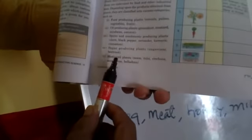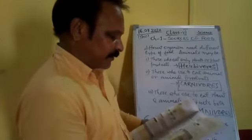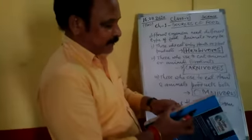And lastly, medicinal plants — for example, Tulsi, coriander, neem, eucalyptus, and belladonna. All these are medicinal plants. So, many food items come from various different types of plants.